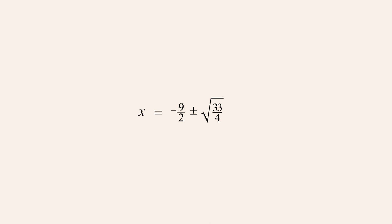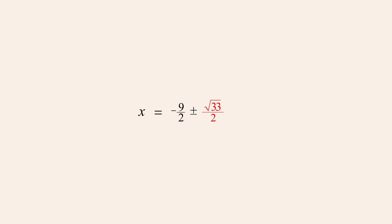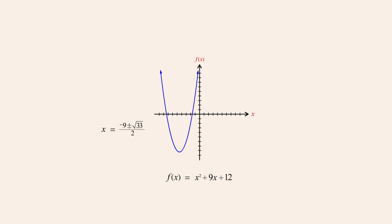We can simplify further by writing 33 fourths as one-fourth times 33. And since one-fourth is one-half squared, it can be brought out from under the radical sign. Finally, negative 9-halves plus or minus the square root of 33-halves can be combined into a single fraction: negative 9 plus or minus the square root of 33 over 2. So although the quadratic function x-squared plus 9x plus 12 was not able to be factored by inspection, the zeros of that function can be calculated by completing the square.